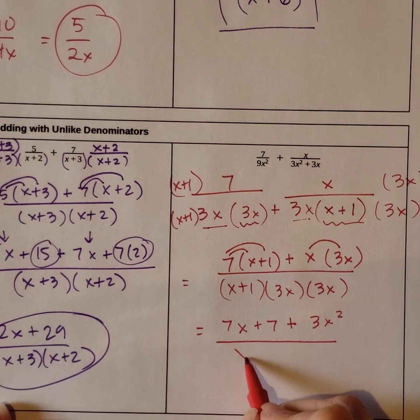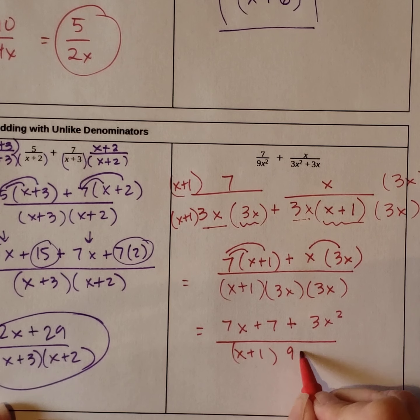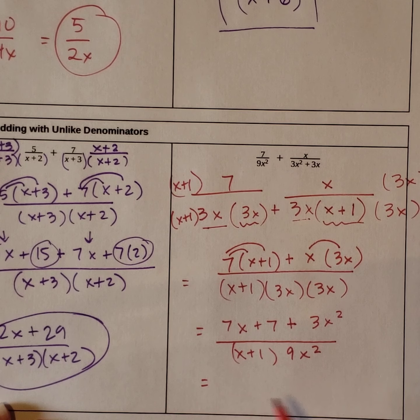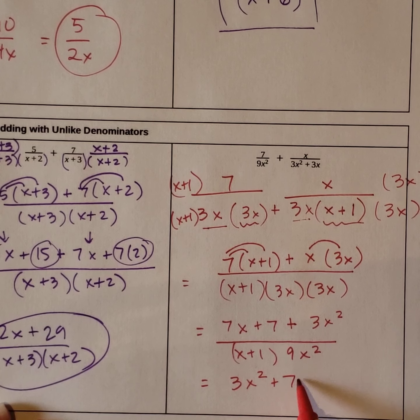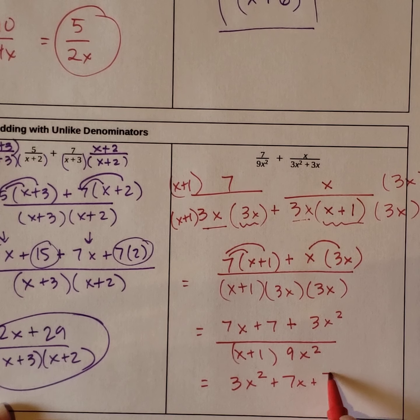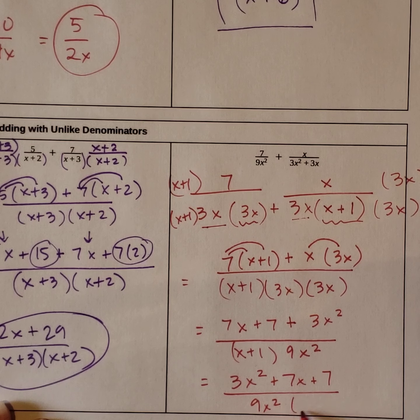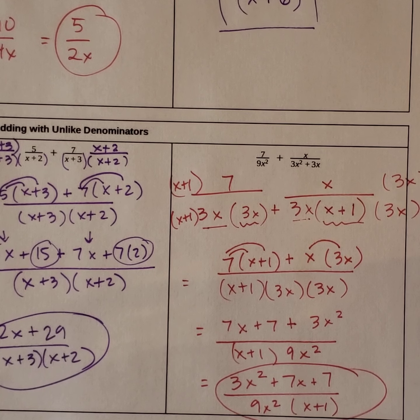And x plus 1. If I multiply these back together, it's 9x squared. I'm going to rearrange this so that it's in order, standard order. 3x squared plus 7x plus 7, all over 9x squared times x plus 1. And this is your final answer.